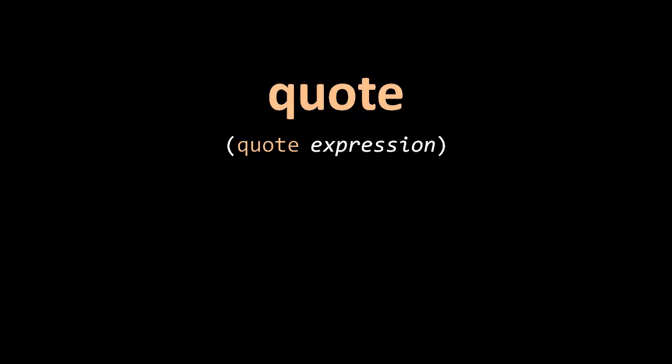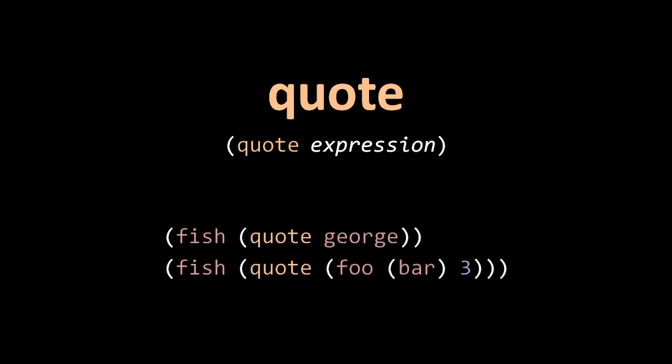It just stays the way it was when the reader handed it to the evaluator. In the top example, we are quoting the symbol George. So George is not resolved in the current namespace, it's not resolved at all. It's just the symbol George. And so when we call fish, the argument is the symbol George. That's the value passed to fish.